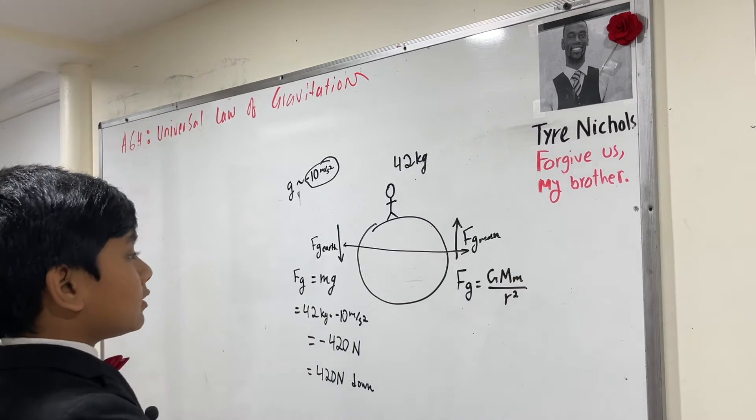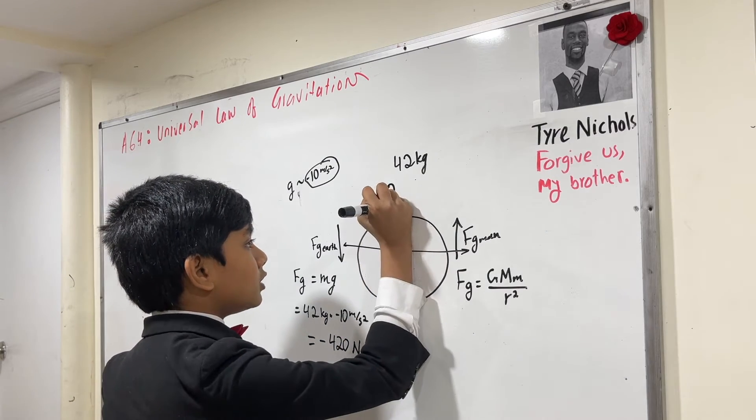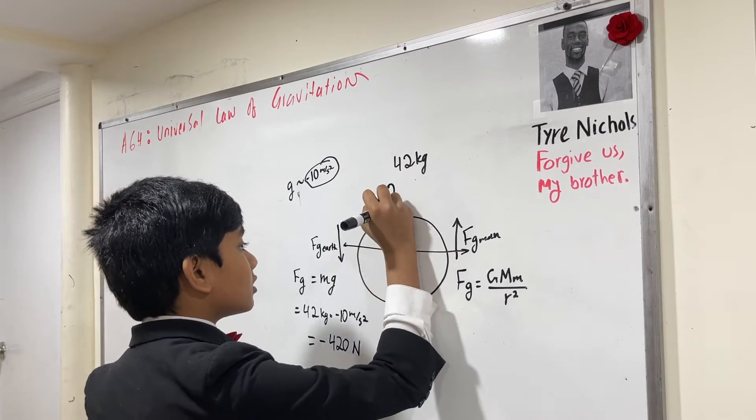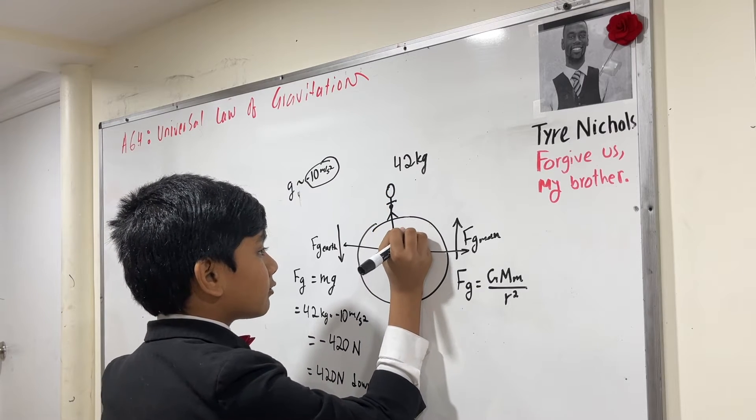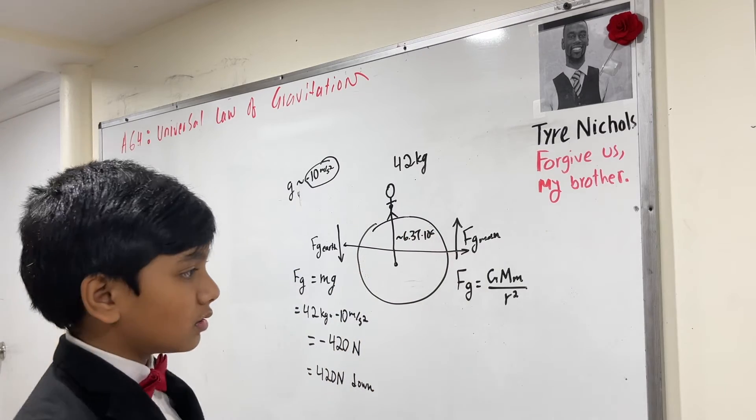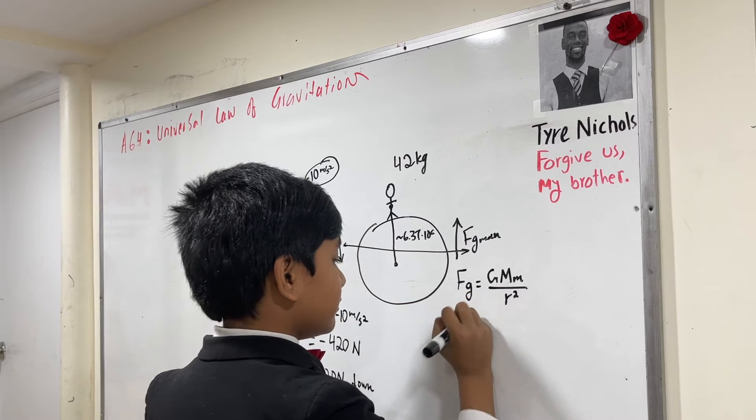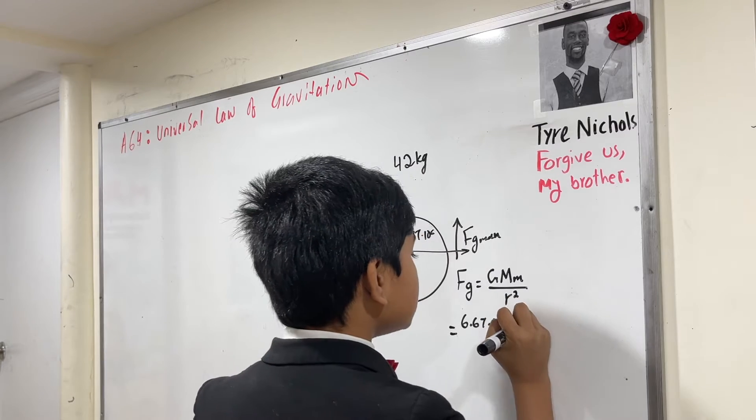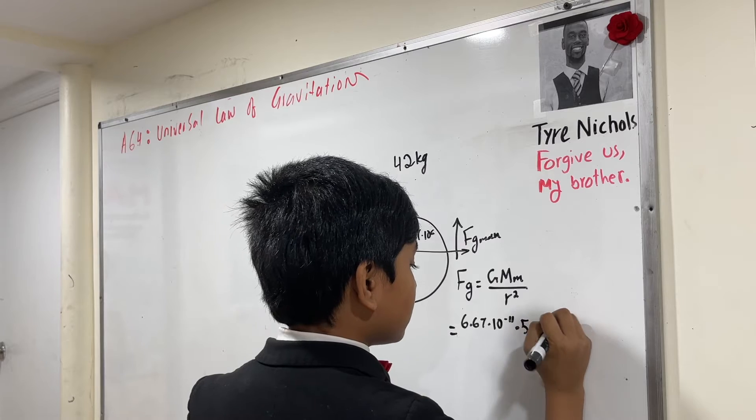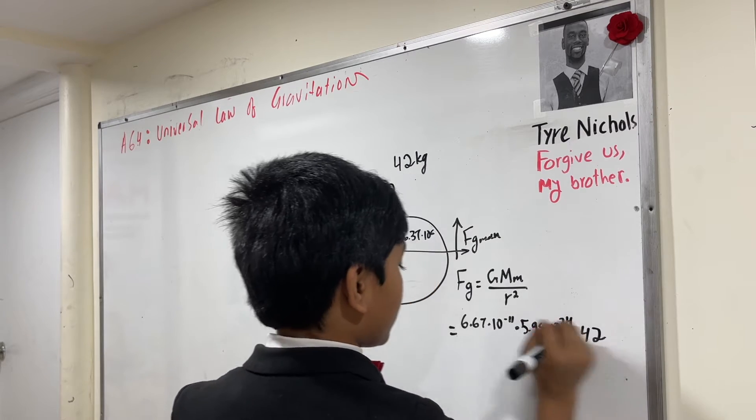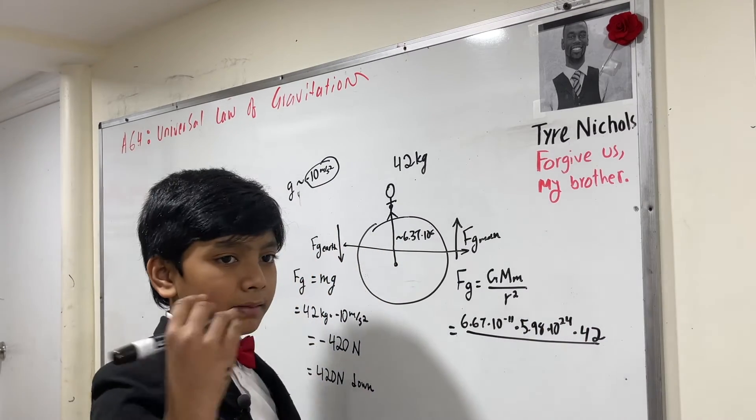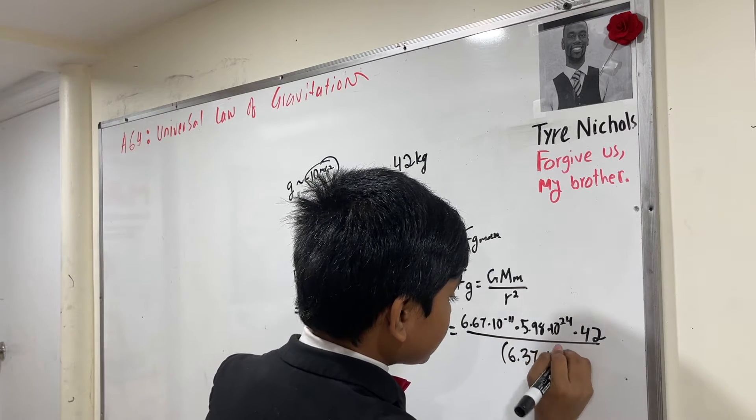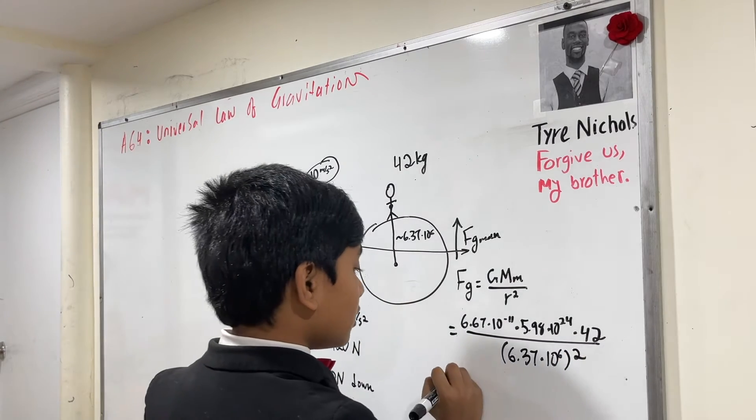So now the distance between the center of the two is basically the radius of the earth, because you could say the distance is the center of the man, but his height doesn't really make any difference in comparison to the colossal earth. So that means that this distance is about 6.37 times 10 to the sixth. So that means that we have G, which is 6.67 times 10 to the negative 11th, times big M, which is 5.98 times 10 to the 24th, times little m, which is 42, and we divide that by r squared, which is 6.37 times 10 to the sixth.